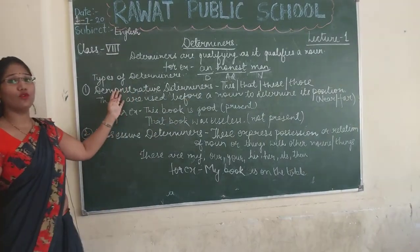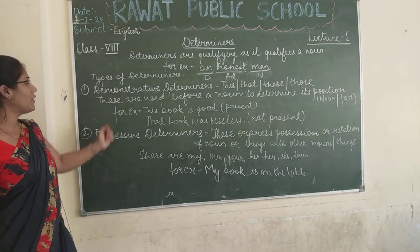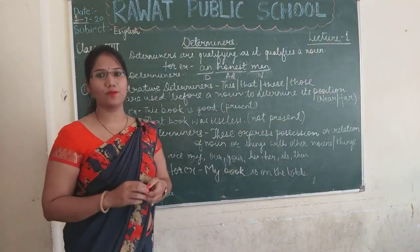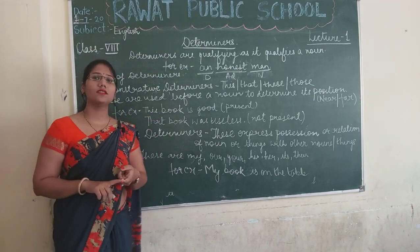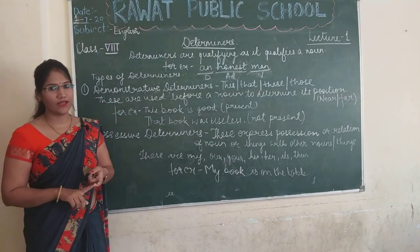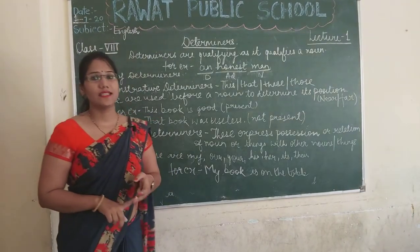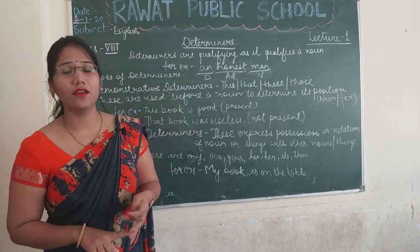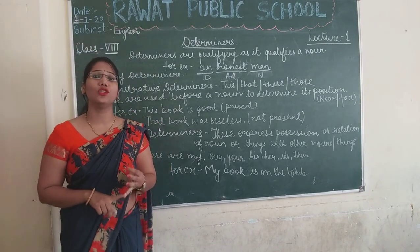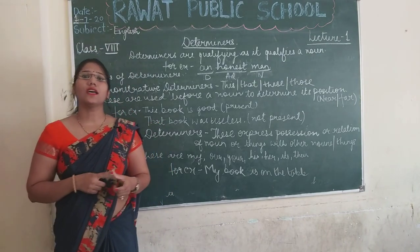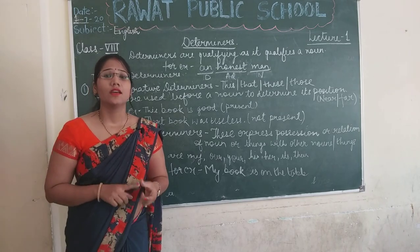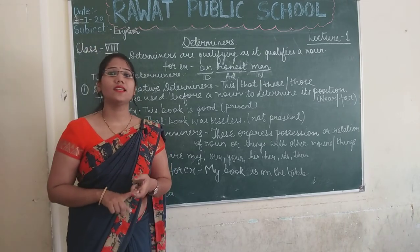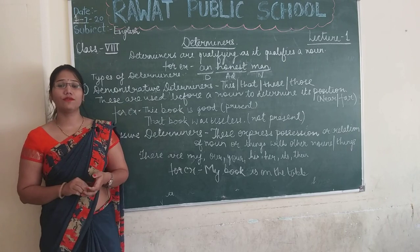Now we will move to types of determiners. Basically there are seven types of determiners: first is demonstrative determiners, second is possessive determiners, third is qualifying determiners, fourth is numeral determiners, fifth is articles, sixth is quantifying determiners, and the last is interrogative determiners.